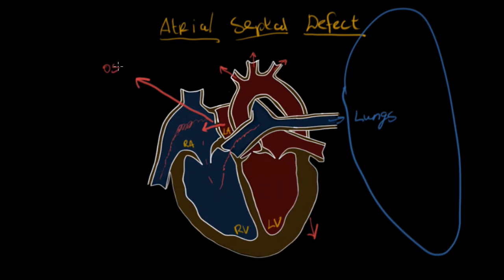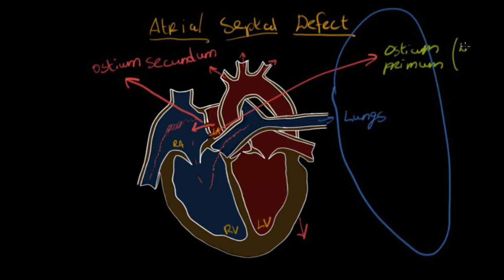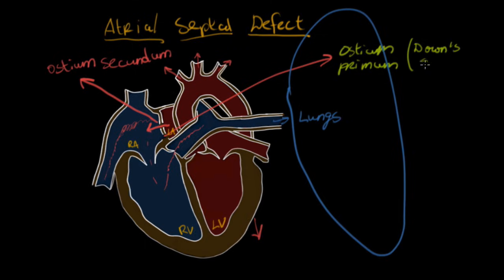And this positioning is called ostium secundum. So that's the position, that's the place where we usually have it, right there in the middle of the wall. But it can also be lower down. So if we were to have a hole down here, to the point that maybe it even involves this valve between the atrium and the ventricle, that is going to be ostium primum. So that's lower down. That's not generally seen, but it is seen in some individuals with Down syndrome.